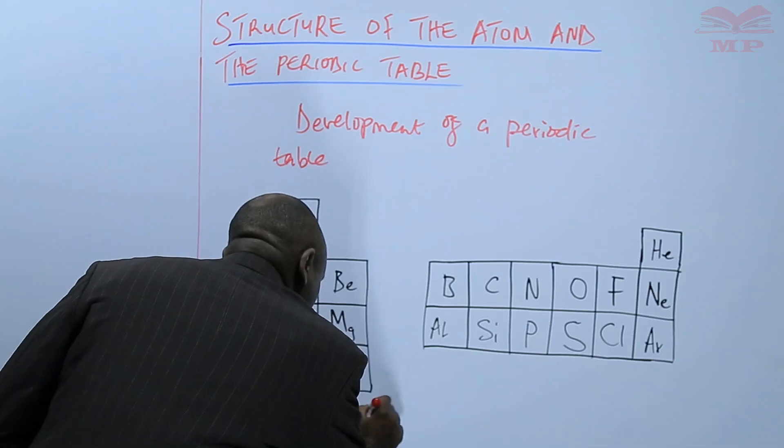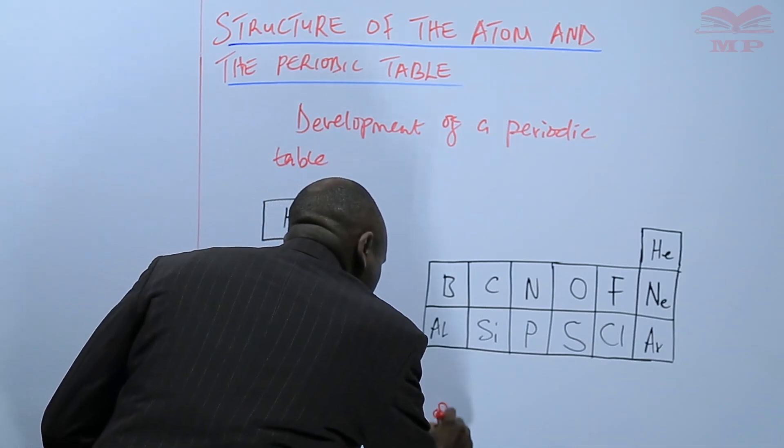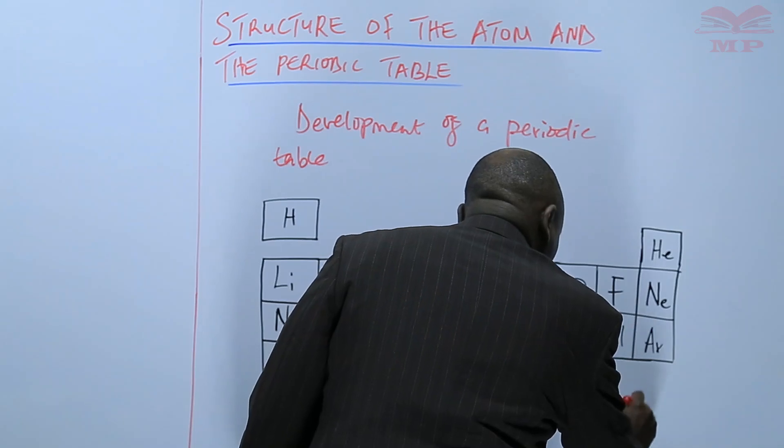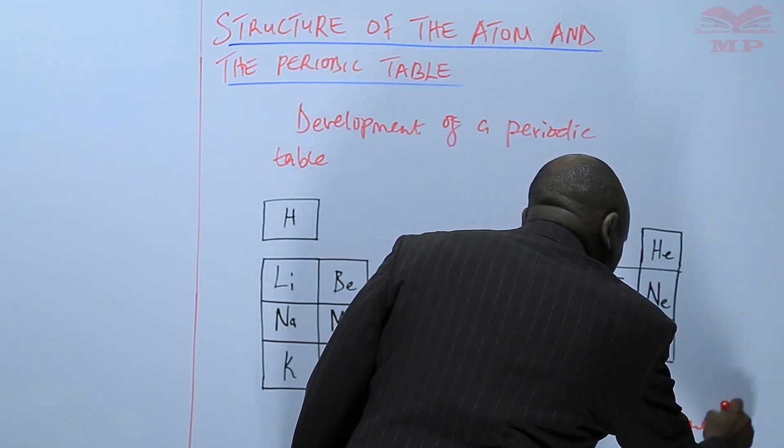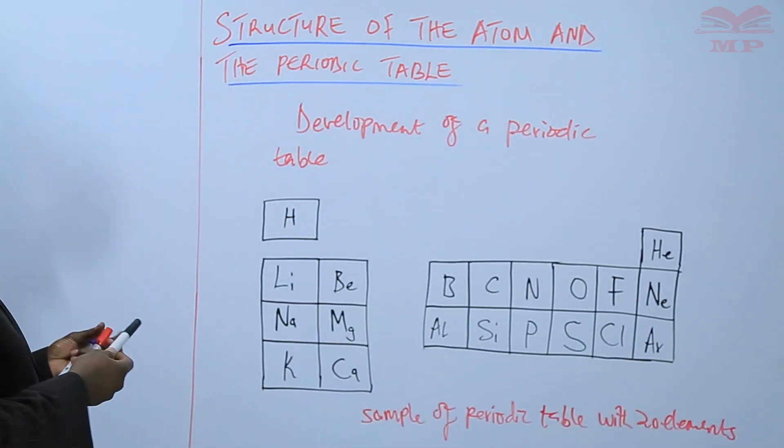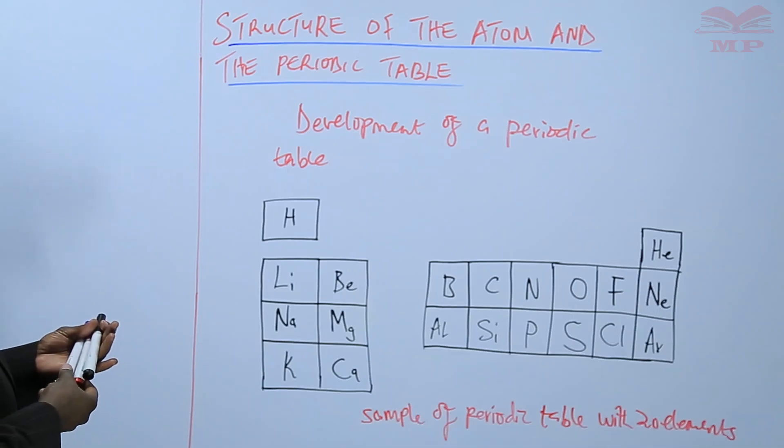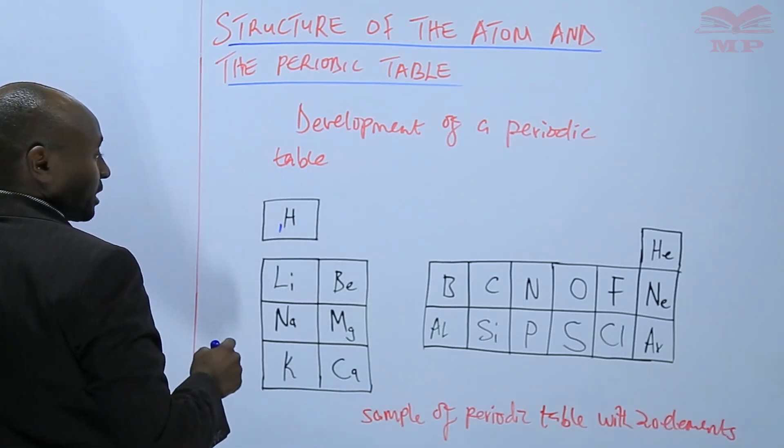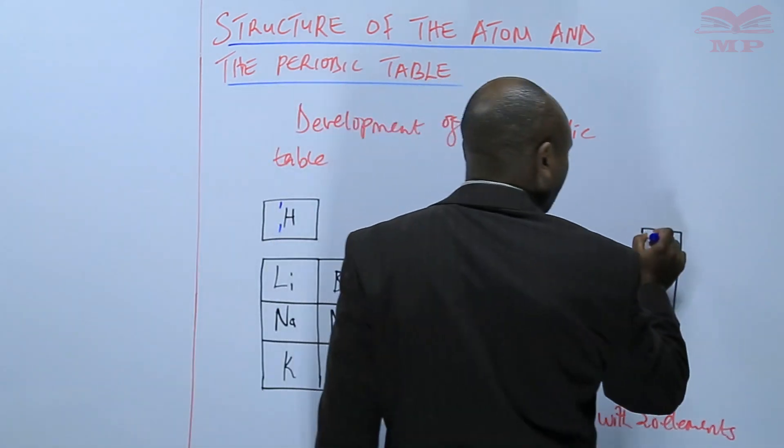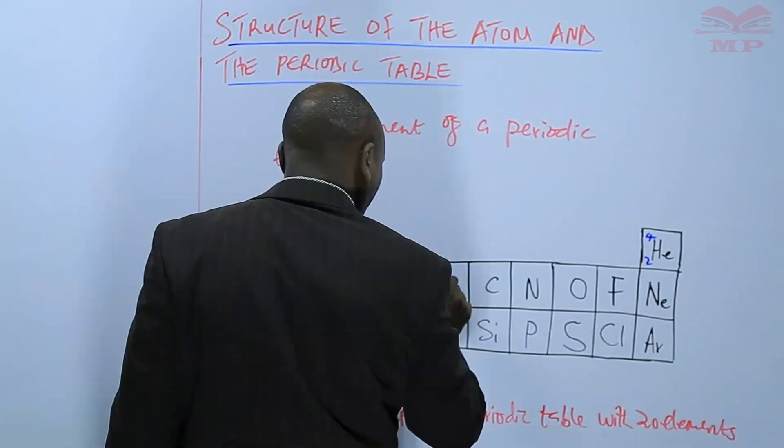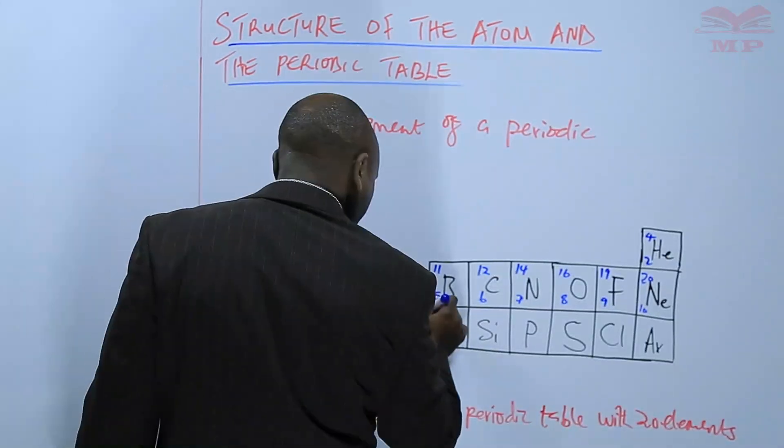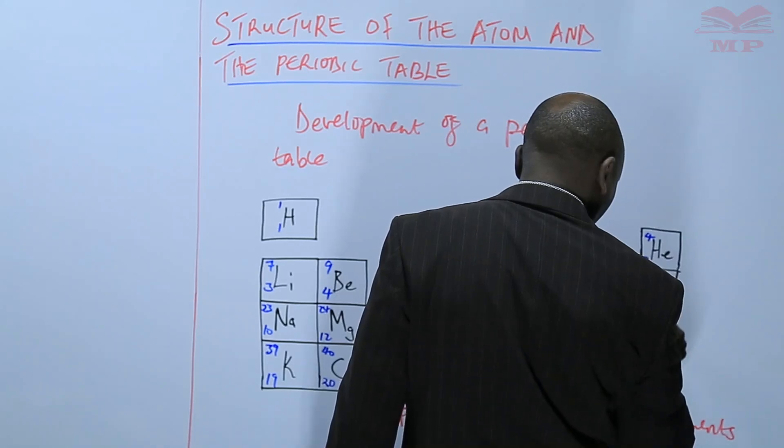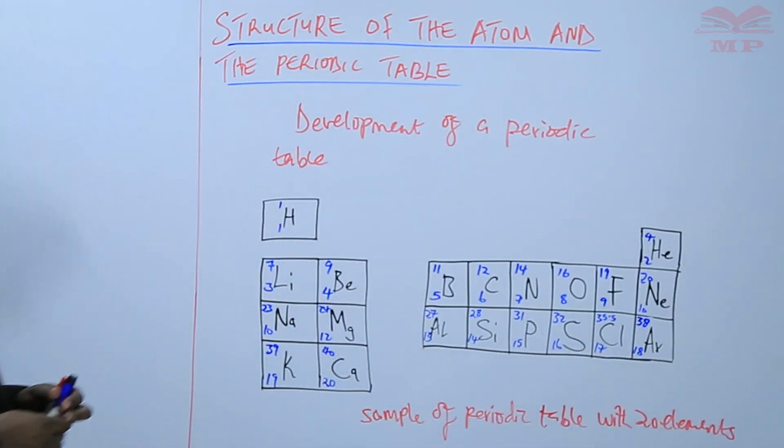With the 20 elements, these elements are arranged according to the number of electrons, that is the atomic number. Mass number is one. So this shows the sample of the periodic table.